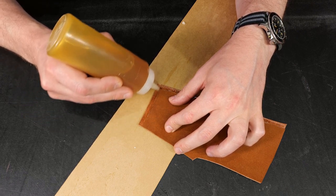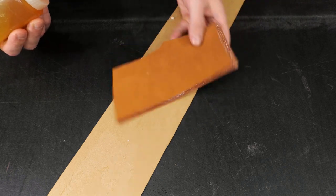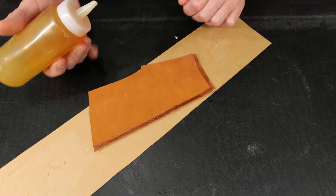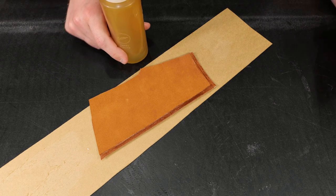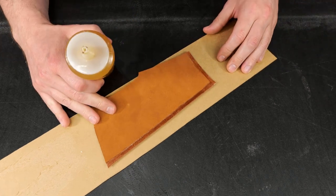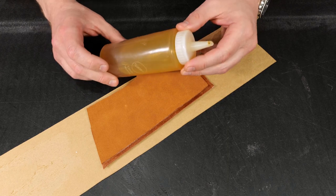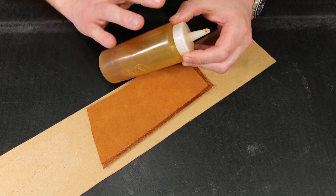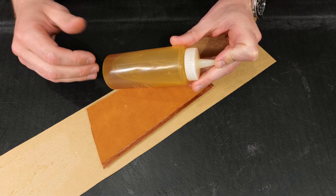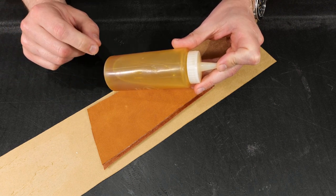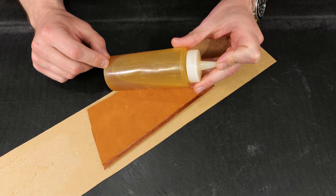There are applications where a spatula is going to be better, or a brush if you really want to push that glue into the fibers, but for 90% of the work that I've been doing, this is fantastic. Solvent contact adhesives are great, especially for non-porous surfaces, but the issue is obviously the fumes that come from this if you're not properly ventilated while you're working.